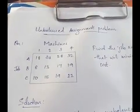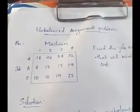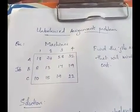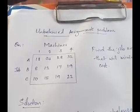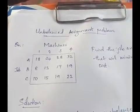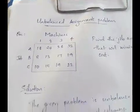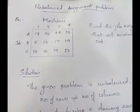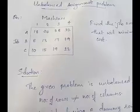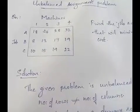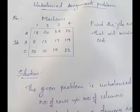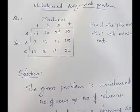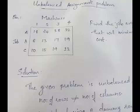Unbalanced assignment problem. An assignment problem is said to be unbalanced if the number of rows is not equal to the number of columns. In this question we have 4 columns and 3 rows, which means it is an unbalanced assignment problem.